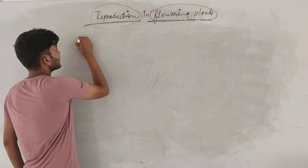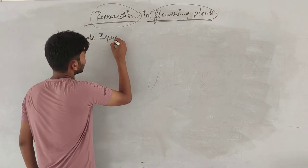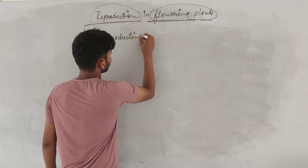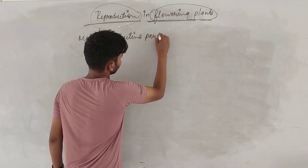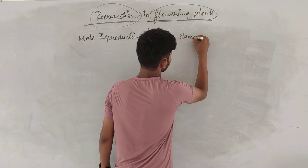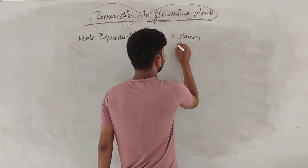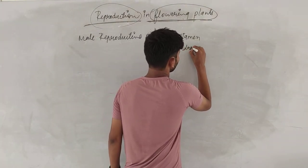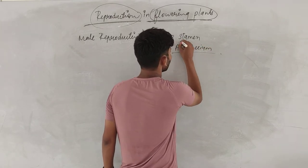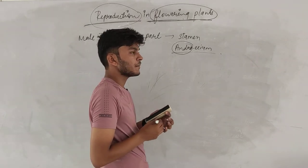This is the male reproductive part, that is the stamen. Stamen is what we call the androecium. Androecium refers to the male part of the flower.